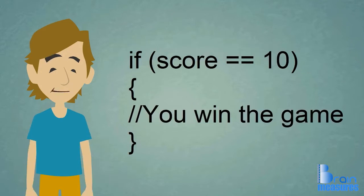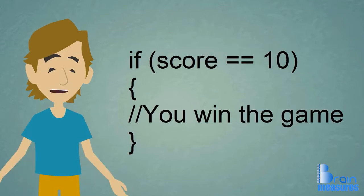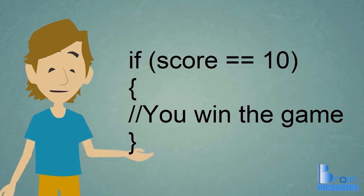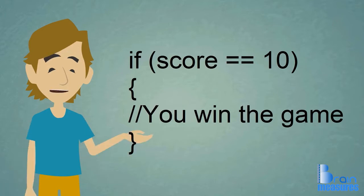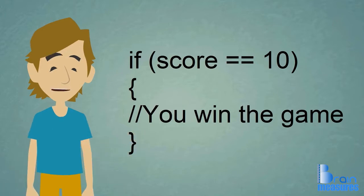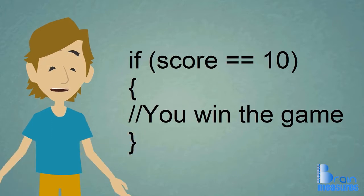Here we have an if statement with an int variable score. If score reaches 10, then the game is over and the player wins. Notice how there are two equal signs instead of one?